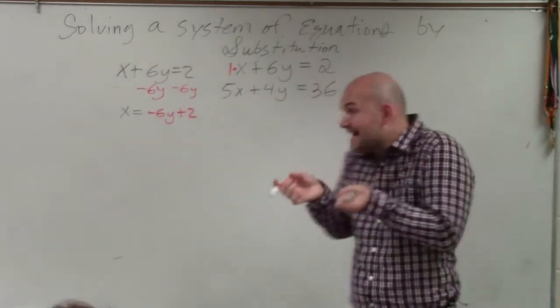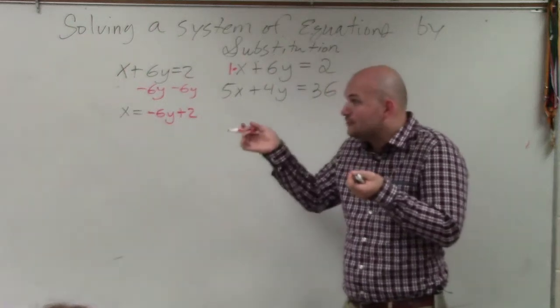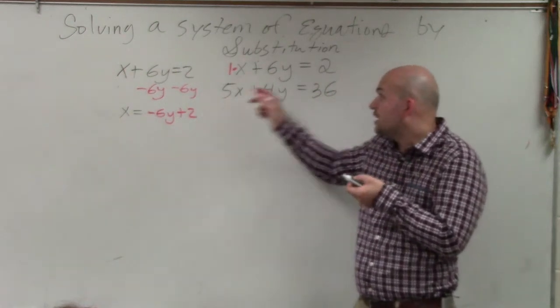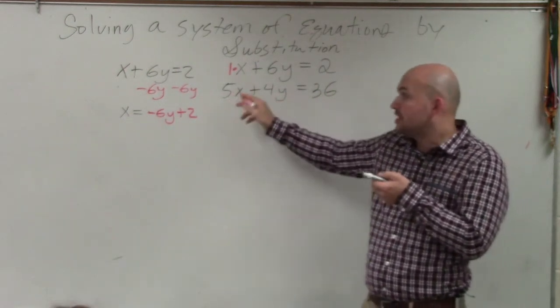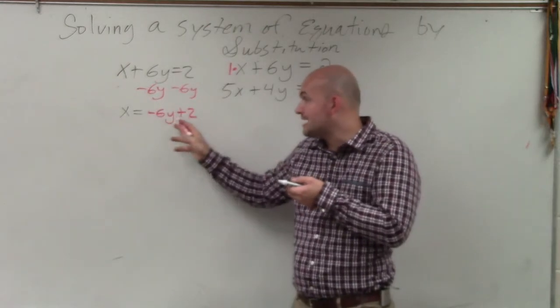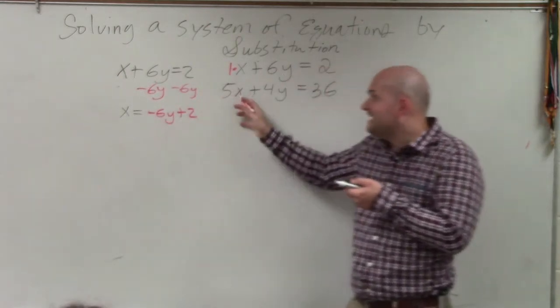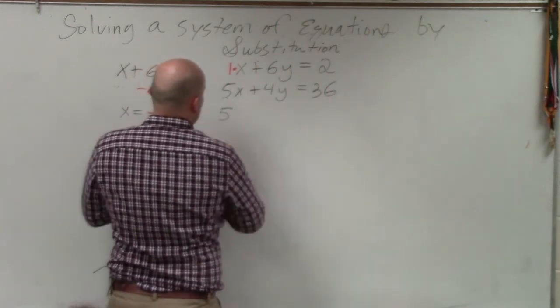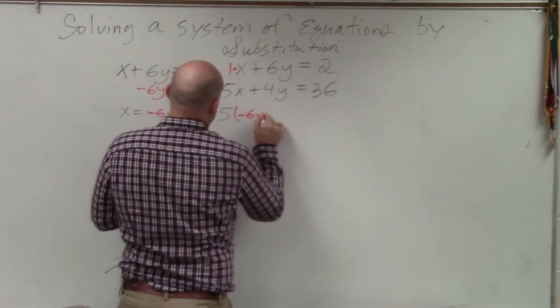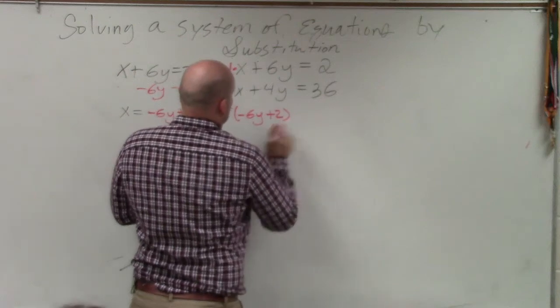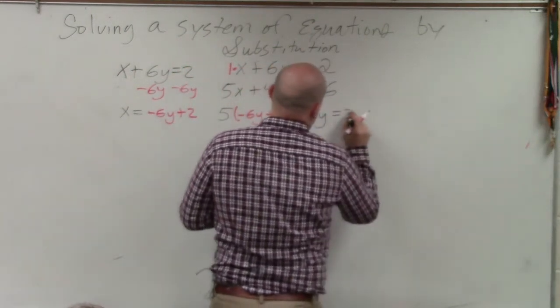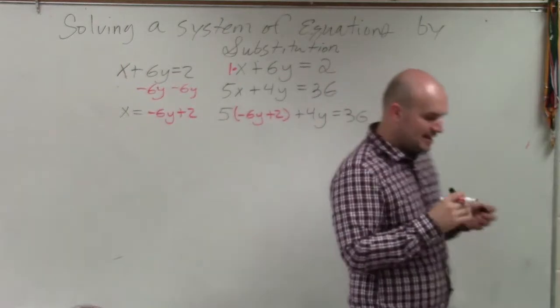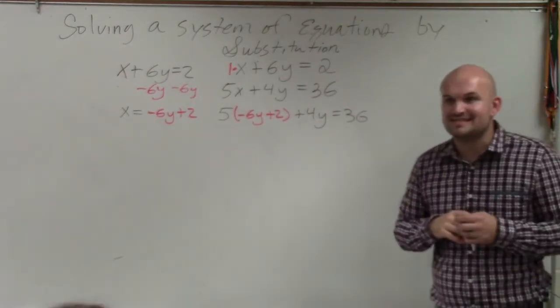So I'm going to plug in what x is equal to in for the same variable, which is x, of the other equation. So that means x is equal to this. I'm going to plug this quantity in for x in this equation. So it looks something like this: 5 times negative 6y plus 2 plus 4y equals 36. Can everybody visualize what I just did?